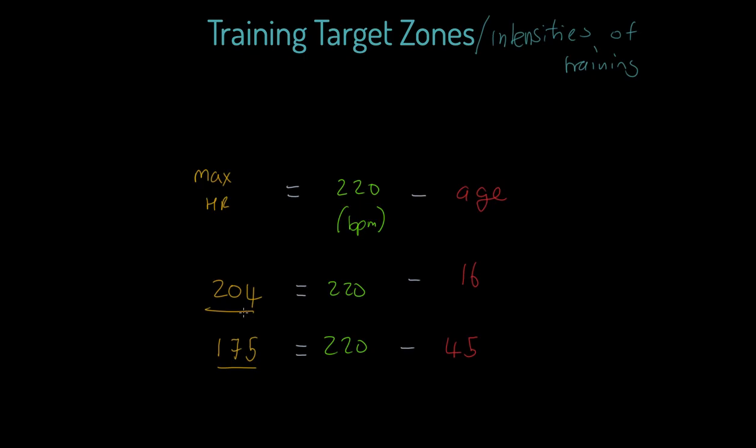So of course the generalization here is that we lose a beat per minute as a maximum heart rate value each year of our lives. That's an interesting sort of principle first of all.